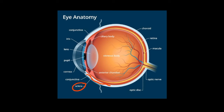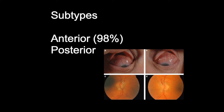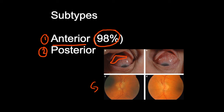In terms of subtypes, I'm not going to go into too much detail because this video is designed to be a broad overview for the non-specialist, but there are two main types of scleritis. The first is anterior scleritis, which makes up about 98% of types, and that can be further subdivided into diffuse, nodular, and necrotizing. There's also posterior scleritis, which is much less common — affecting the back of the eye. The take-home is that anterior scleritis is much more common, and posterior scleritis does exist but is much less common.